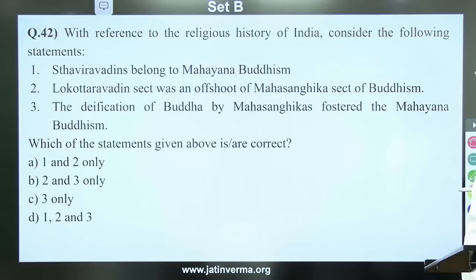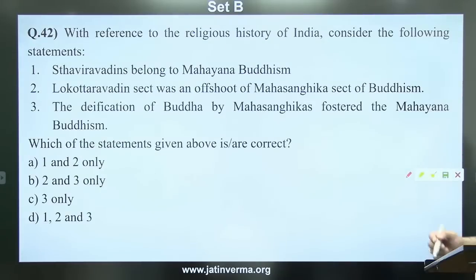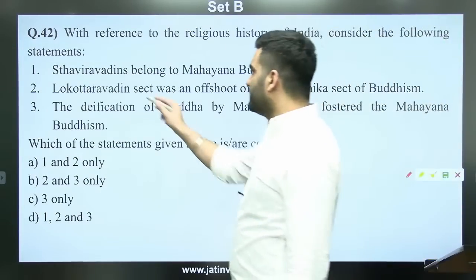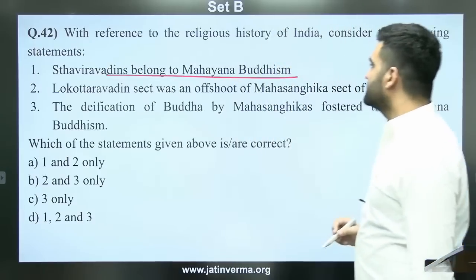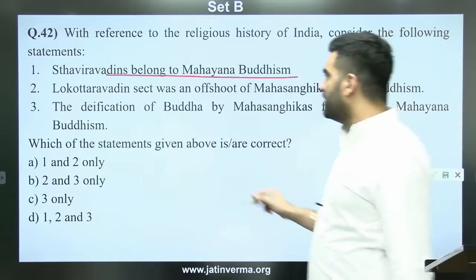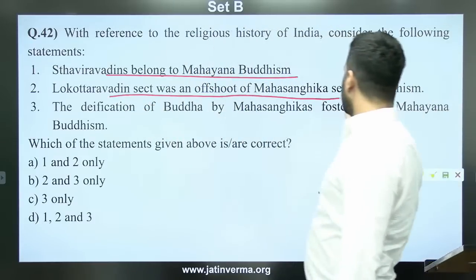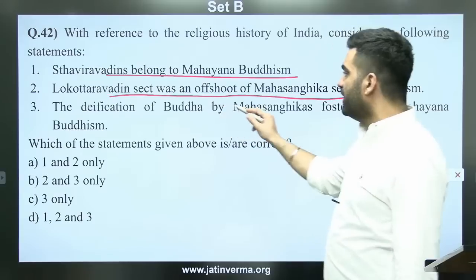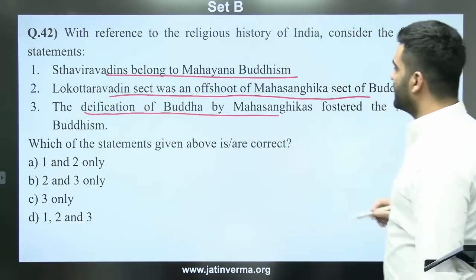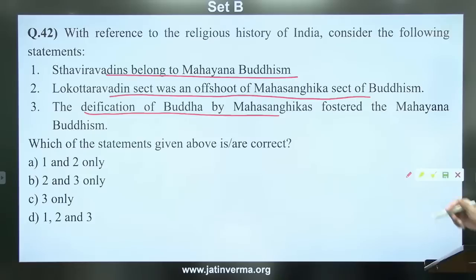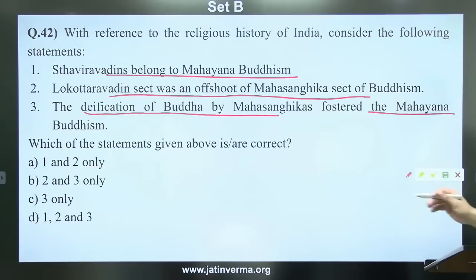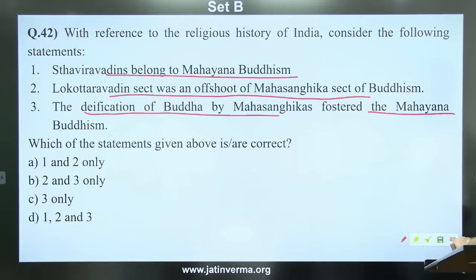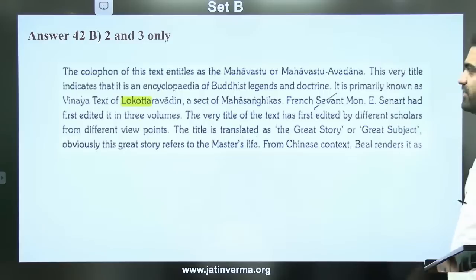Question 42: With reference to the religious history of India — Satvira Vadins belong to Mahayana Buddhism; the Loktara Vadin sect was an offshoot of the Mahasangika sect of Buddhism; the deification of Buddha by Mahasangikas fostered Mahayana Buddhism. Those with detailed history knowledge, including History optional preparation with Shankar Bandyopadhyay, should know this. The answer to question 42 is B — 2 and 3 only.